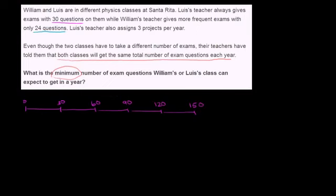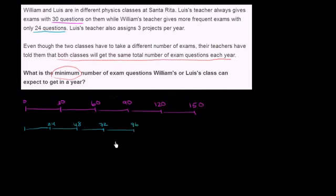What's going on with William? William's teacher: after the first test they're going to get to 24 questions, then 48 after the second test, then 72 after the third test, then 96 after the fourth test — I'm just taking multiples of 24. After the fifth test they're going to get to 120, and if there's a sixth test they would get to 144.